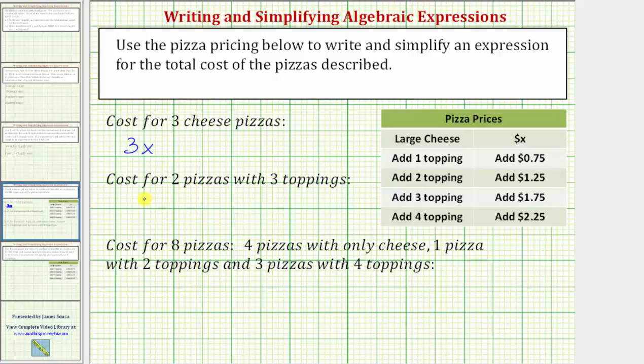So, beginning with x plus 1.75, let's now find the cost of two pizzas with three toppings. Well, the cost would be twice this amount, and therefore, the expression is two times the quantity x plus 1.75.